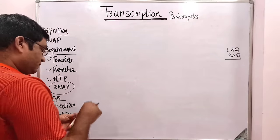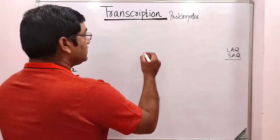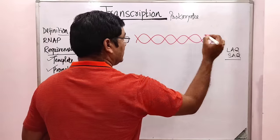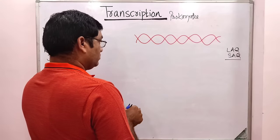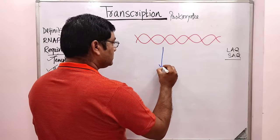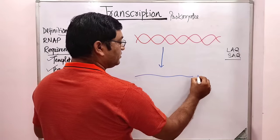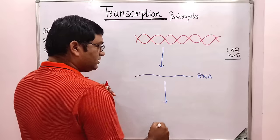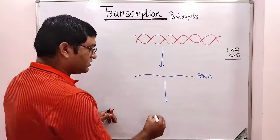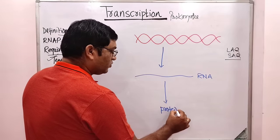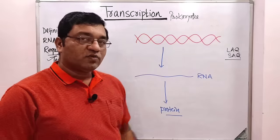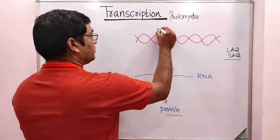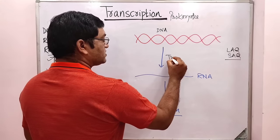So what do you mean by transcription? It is a synthesis of RNA from a DNA molecule. By the process of transcription, this DNA molecule is converted into RNA, and then RNA, by the process of translation, is converted into specific protein. This is known as the central dogma of molecular biology. So formation of RNA from DNA is known as transcription.